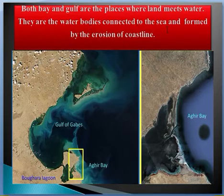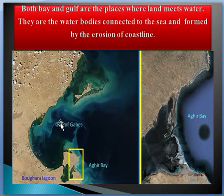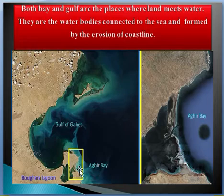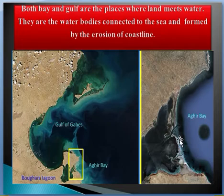Both are formed by the erosion of a coastline. As you can see, this is the Gulf of Gabès and this is the bay which is shown here in the zoomed picture. These are found by the erosion of a coastline.